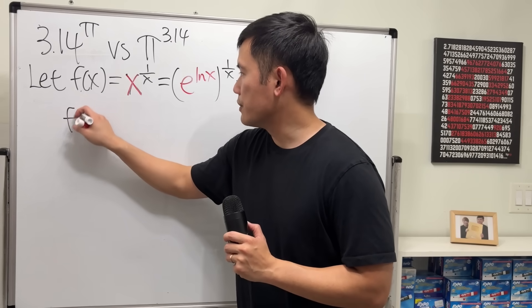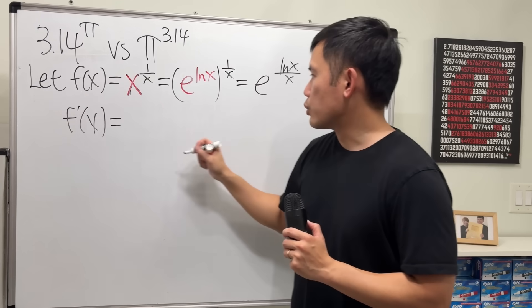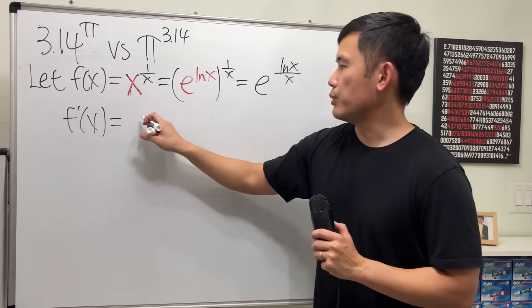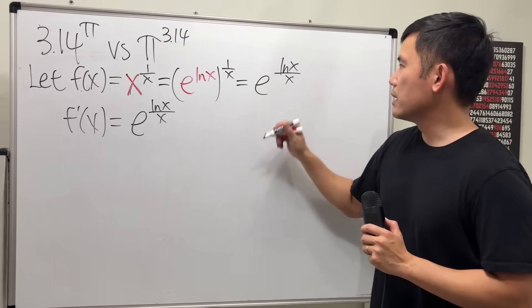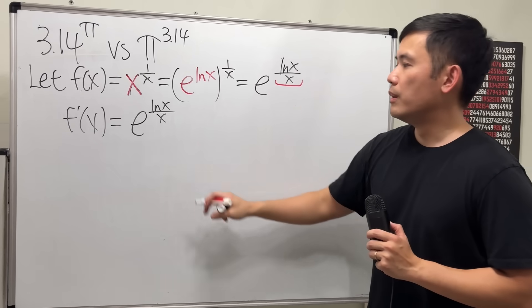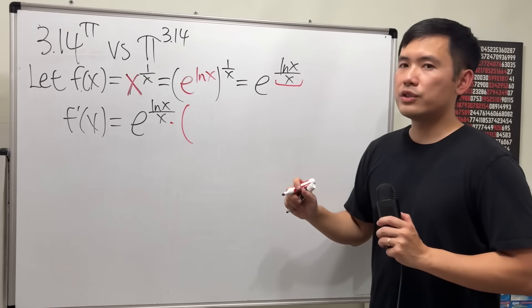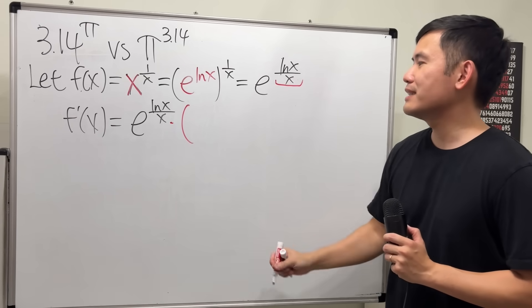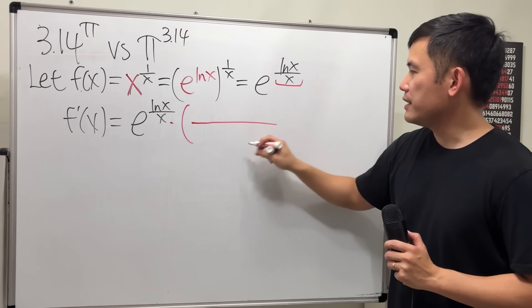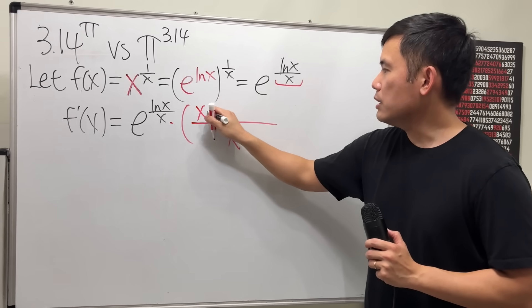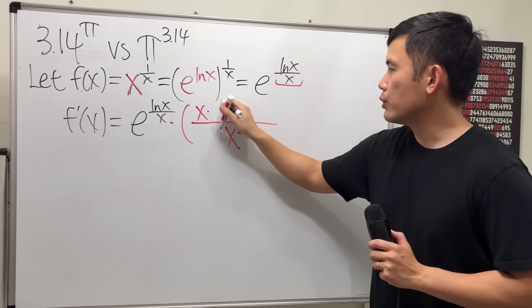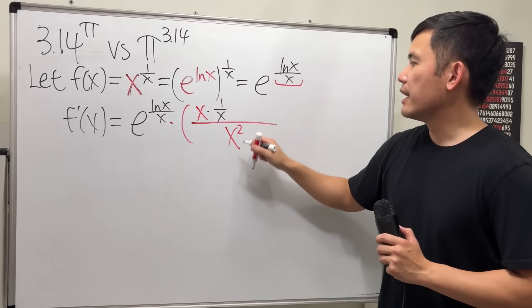This is the same as e to the ln x over x power. Then, let's go ahead and take the derivative. The derivative e to the something is still that, so repeat that. Not done yet though, because we need to use the chain rule. Multiply by the derivative of the inner function, and we will have to use the quotient rule for that. Well, square the denominator, and then put the denominator right here. Multiply by the derivative of the top, which is 1 over x.